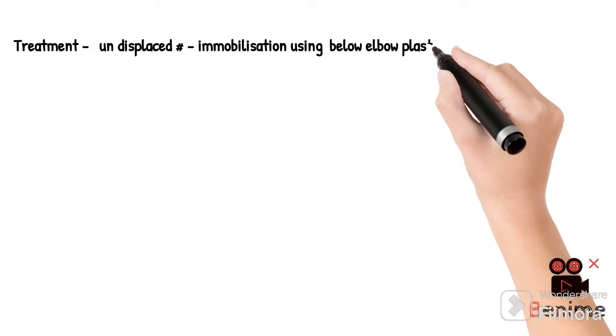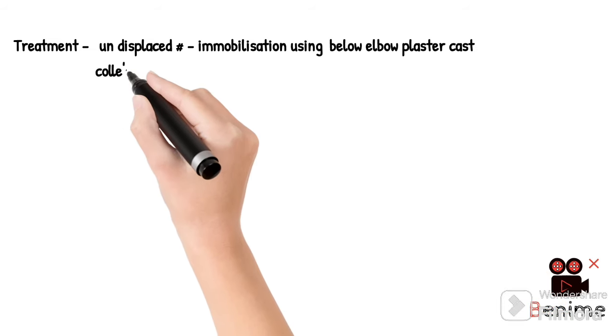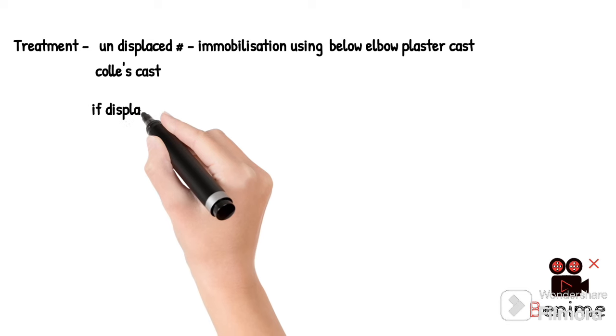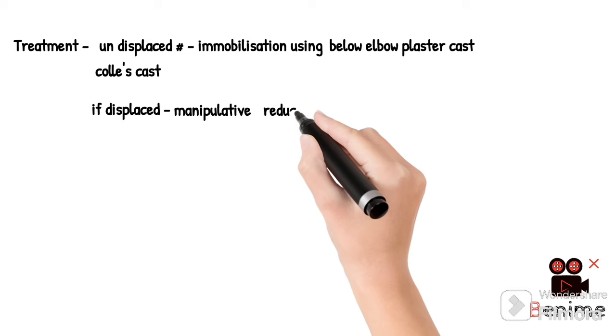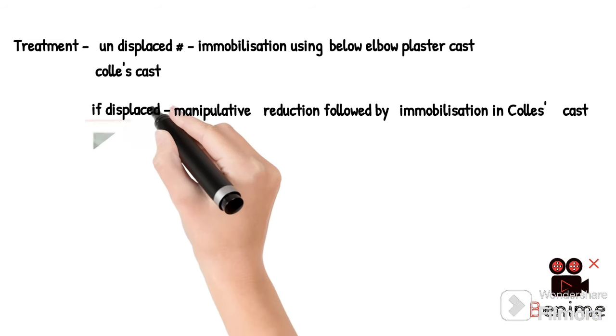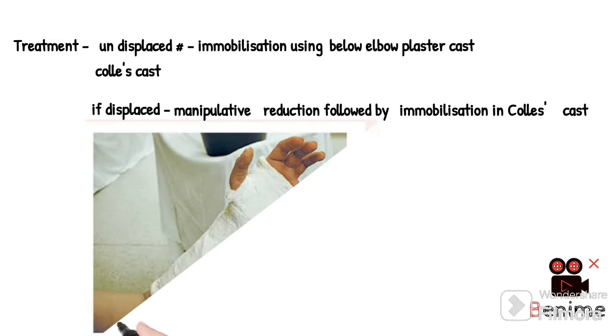Treatment: undisplaced fracture, immobilization using below elbow plaster cast which is also called the Colles cast. If there is displaced fracture, manipulative reduction followed by immobilization in Colles cast can be done.